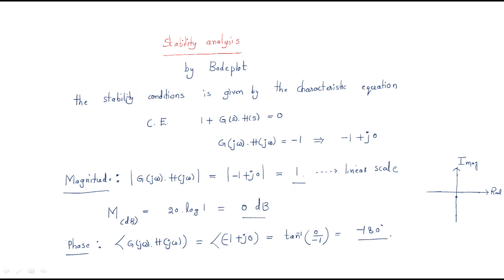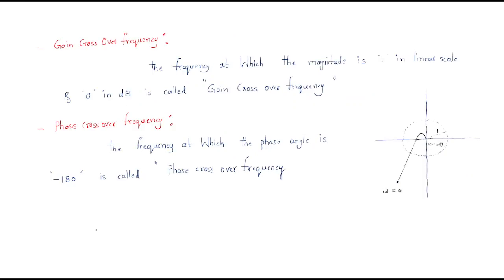So for stability analysis, the magnitude must be 1 or 0 dB, and the phase must be minus 180 degrees. These two concepts — the magnitude condition and the phase condition — are very important. Next, we will define gain crossover frequency and phase crossover frequency.